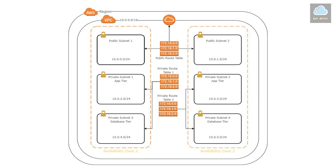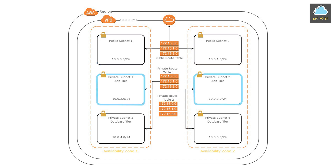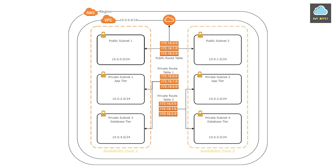Hello, in this tutorial I'll be showing you how to create a VPC with public and private subnets. We'll be using this architecture to create our VPC, and it is a three-tier architecture. On the first tier, we have a public subnet in two different availability zones. On the second tier, we have a private subnet in two different availability zones. And on the third tier, we have another private subnet in two different availability zones. We'll be using all the information on this architecture to create our VPC.